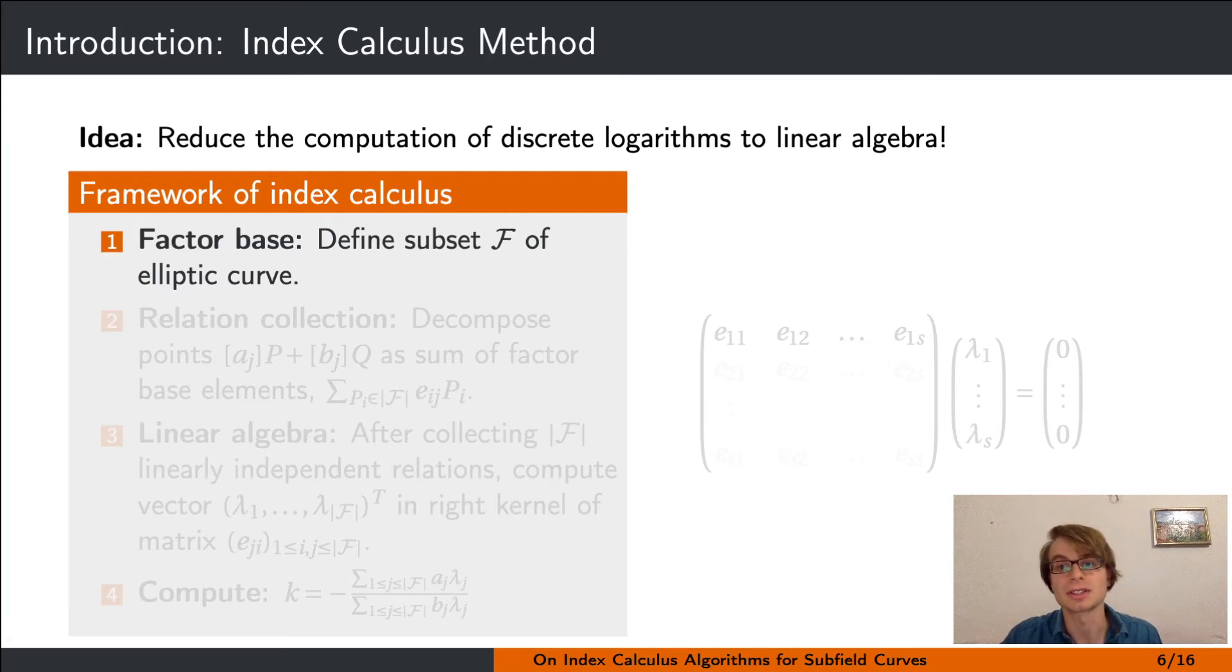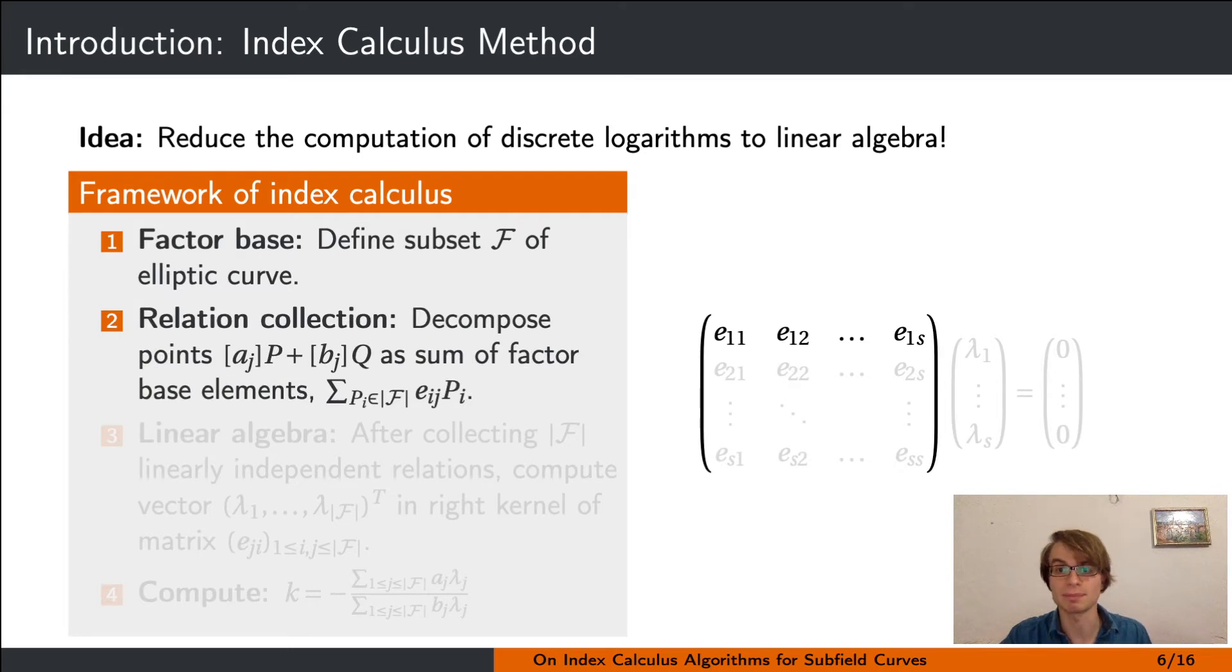Then we collect relations—namely, we take random linear combinations of the base point P and the point Q whose discrete logarithm we want to compute. Then we try to decompose the resulting point as a sum of factor base elements. If such a relation is found, we save the coefficients of P and Q and save the coefficients in the sum over the factor base elements as a row of a matrix.